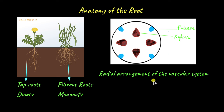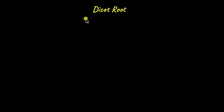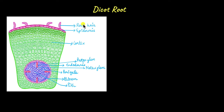To take a look at the internal structure or the anatomy of the root, we need to cut the root horizontally to get the transverse section. Here is how a transverse section of a dicot root looks like.